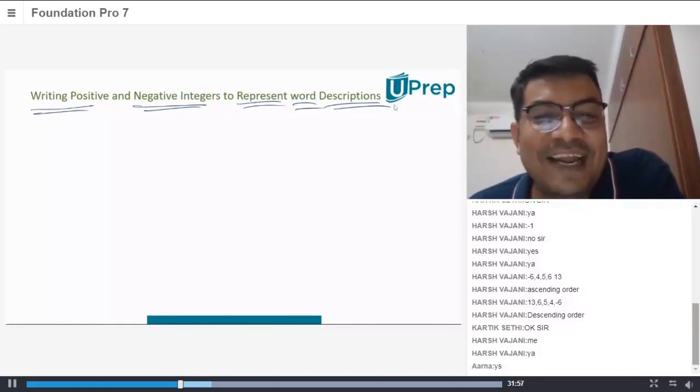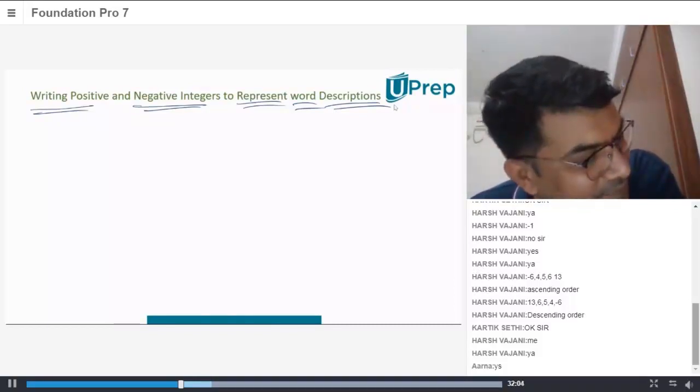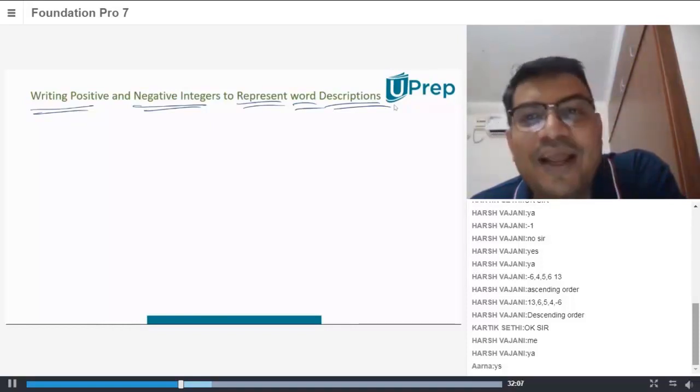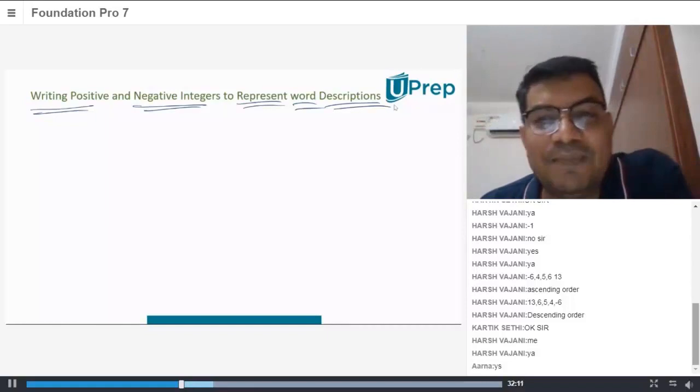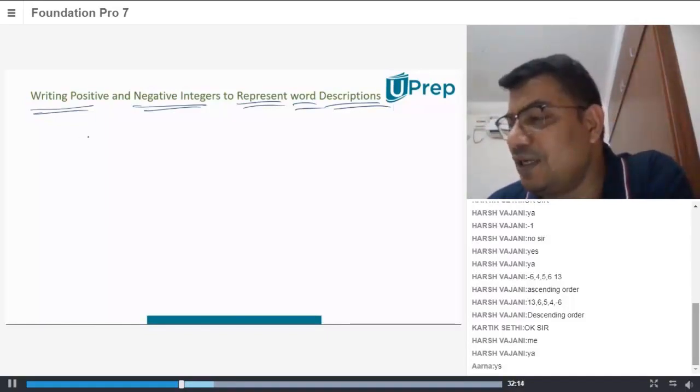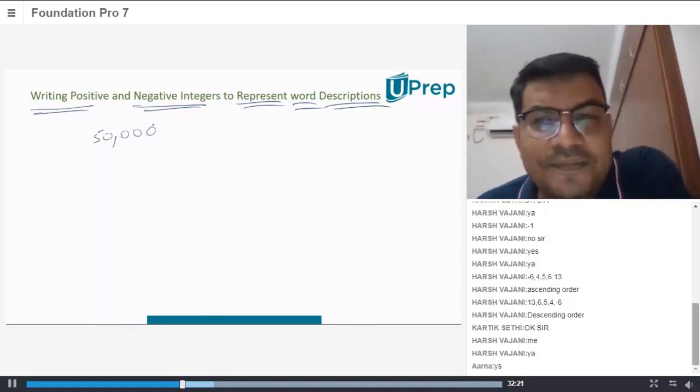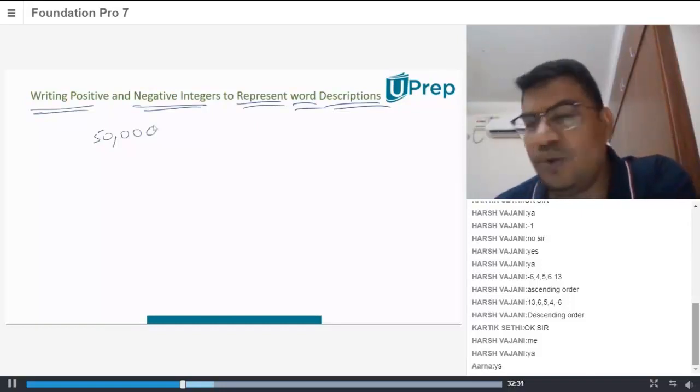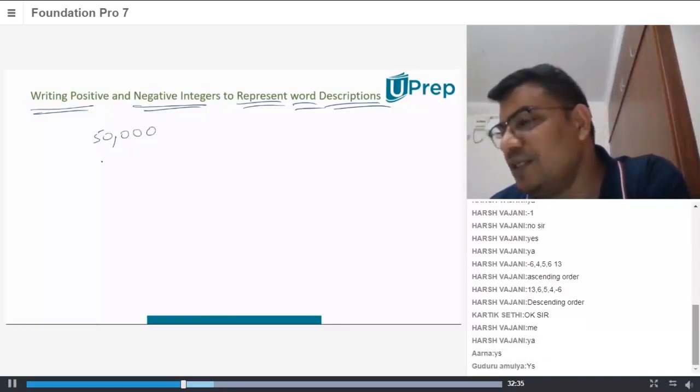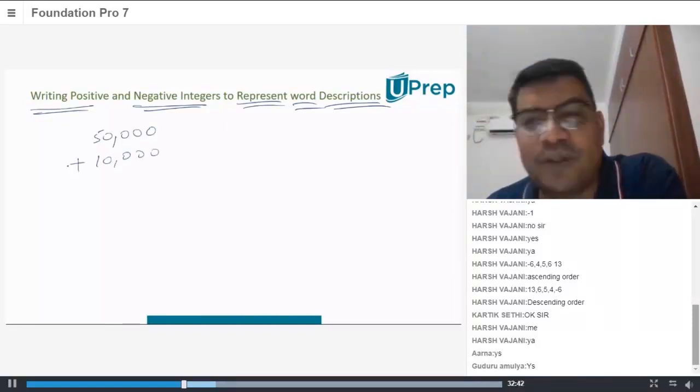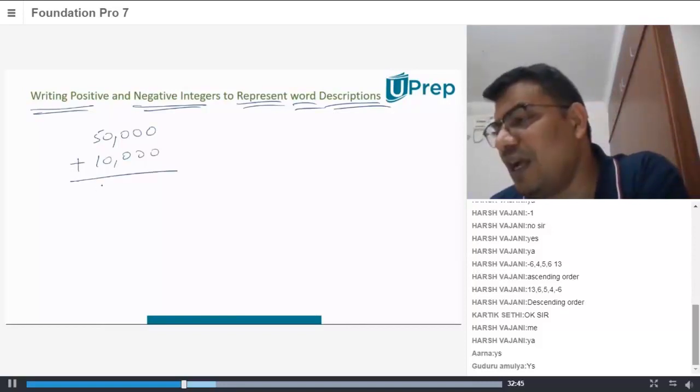I am saying, have you ever seen positive and negative implication of numbers on a passbook? Yes. You see the amount, the amount which is drawn and the amount which is deposited.